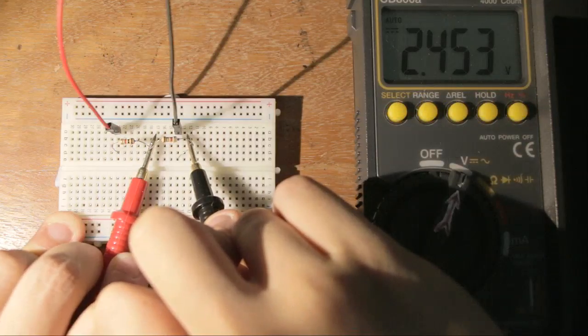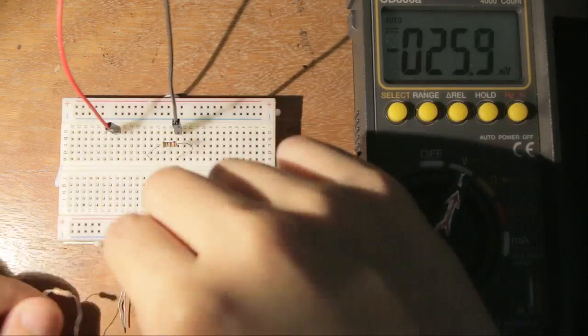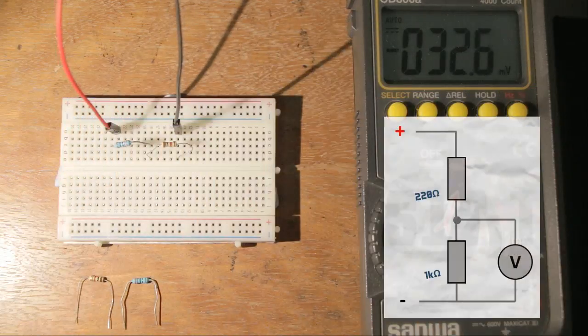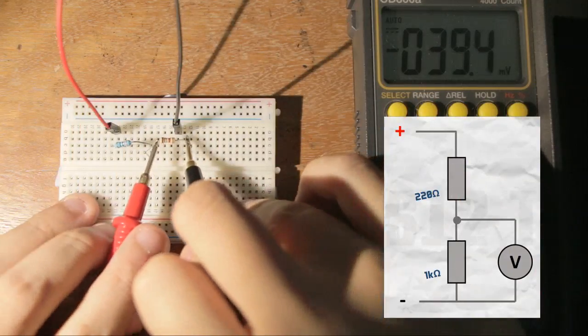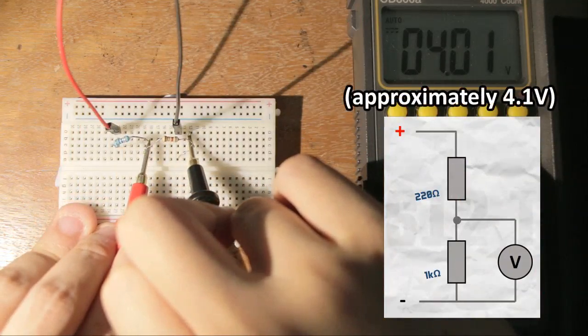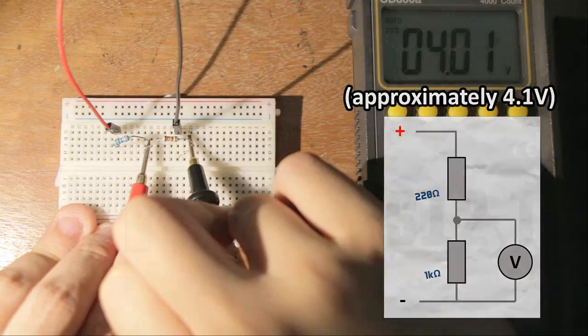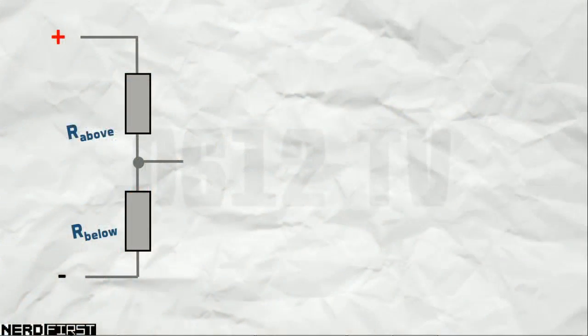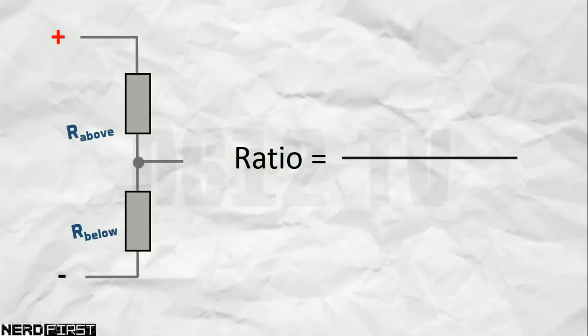So now, let us change up the ratio. Using a 220 ohm resistor alongside a 1K ohm, we create a reading of about 4.1V. How does that work? Turns out, the magic is still in the ratio, which can be calculated like this.